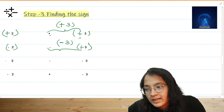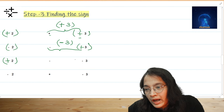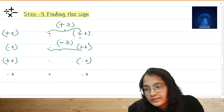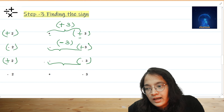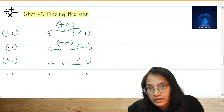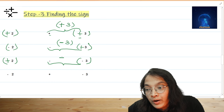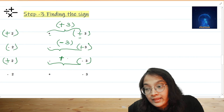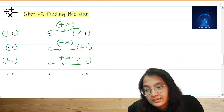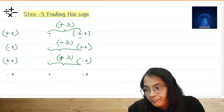In the third example, we have plus 2 minus minus 3. Here you can see these are the same signs — minus minus. When there are same signs, you write it as plus and carry the number as it is, so this becomes plus 3.